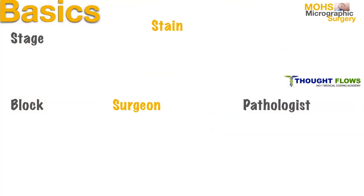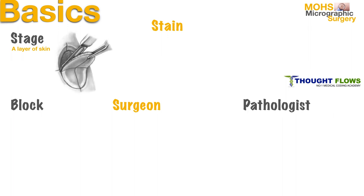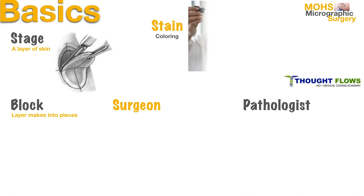Before going into the surgery in detail, we will see some basic terms used in this surgery. First of all, stage — a stage is a layer of cancerous skin that will be removed during the surgery. Next, block — after the layer of skin is removed, the surgeon divides it into smaller portions called blocks.